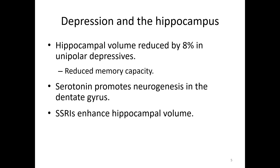Some of the best evidence connects hippocampal loss back to the HPA axis. If you're struggling with depression, you're probably dealing with quite a bit of stress, which could lead to an overactive HPA axis and potential hippocampal cell death. Interestingly, while SSRIs have been found to enhance hippocampal volume in depressed patients, we don't see a reduced hippocampal volume in people with bipolar disorder. It's possible that manic episodes may either spare the hippocampus or that the energy of mania fosters growth — we're not really sure.